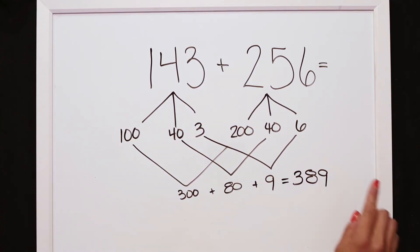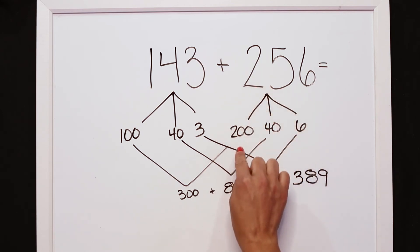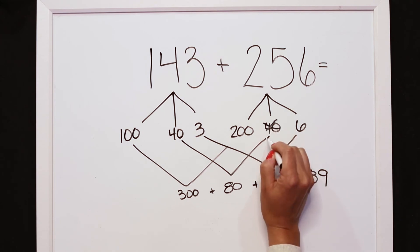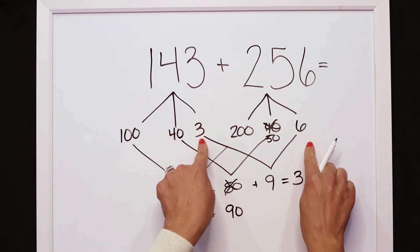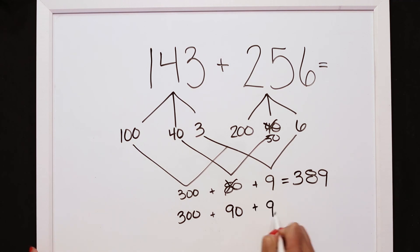Looking at our second addend, I see what she's saying and I see our mistake. It needs to be 200 plus 50 with 6 ones. So now when I go back to adding those together, I have to make that correction. My hundreds are the same, 100 and 200 does equal 300, but now that I have 40 plus 50, that's going to equal 90. My ones are okay, so I'm going to keep those the same. And now I know that my correct answer is 399.